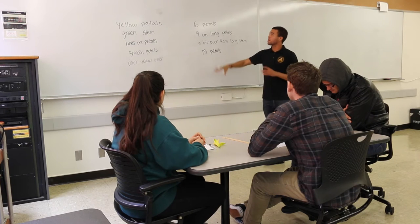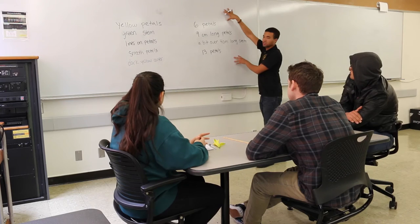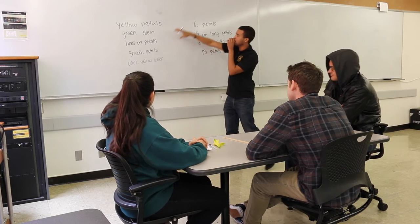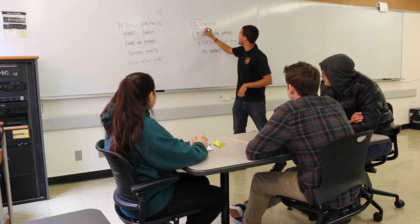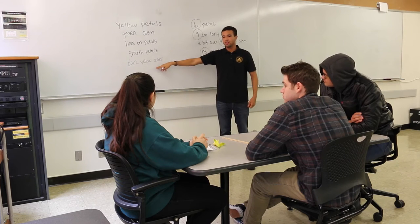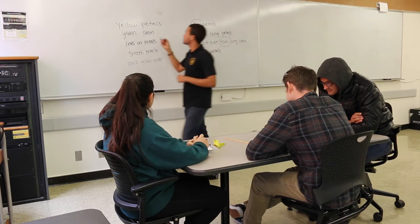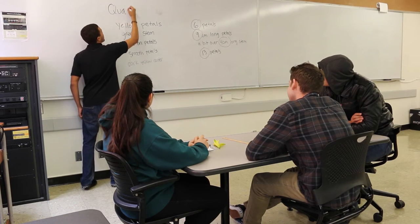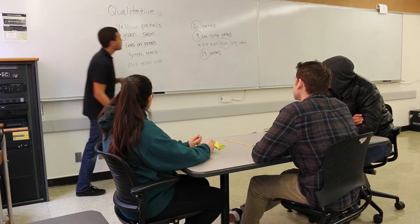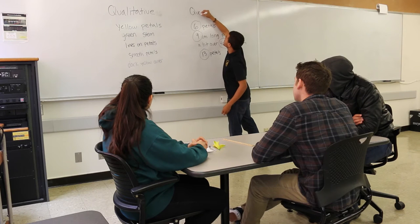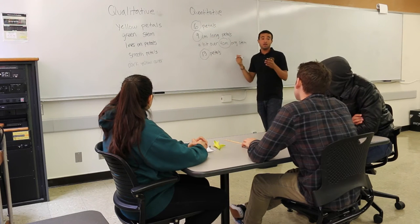It seems like most of you described the petals and the stem of your flowers. What are some things you notice between these types of observations versus these observations? Ariana, what do you think? That column all has numbers in it. So you notice that these are all described using numbers. And how about these? Just words. Exactly — they're only using words. Scientists have a fancy name for these two types of observations. These are called qualitative observations, and they use descriptions — only words — to describe something. These are called quantitative observations, and they use numbers to describe something, usually with a measuring tool such as the ruler you used today.